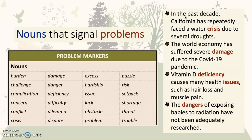Here are some examples. In the past decade, California has repeatedly faced a water crisis due to several droughts. The world economy has suffered severe damage due to the COVID-19 pandemic. Vitamin D deficiency causes many health issues such as hair loss and muscle pain. The dangers of exposing babies to radiation have not been adequately researched.